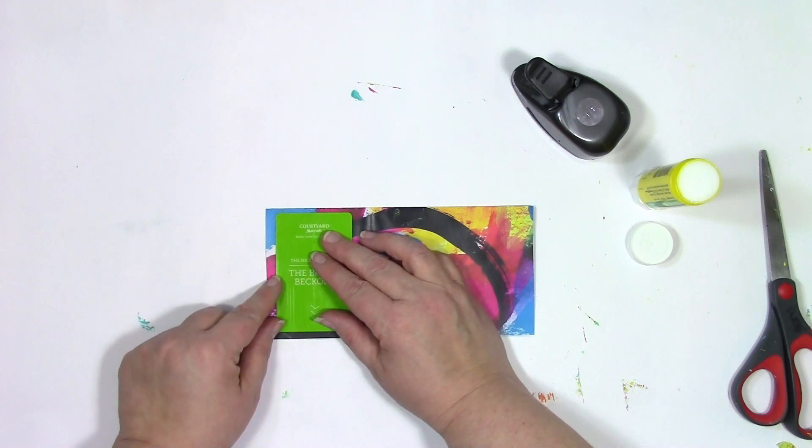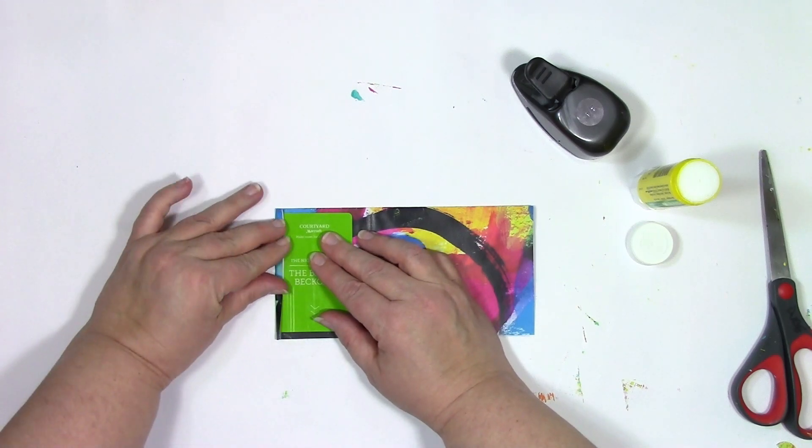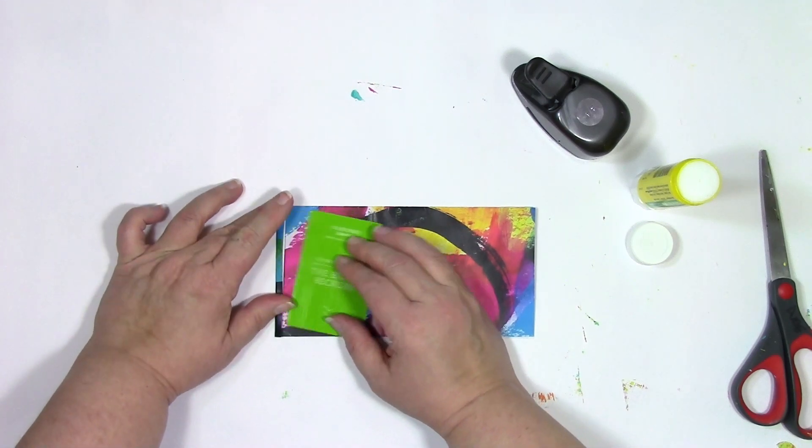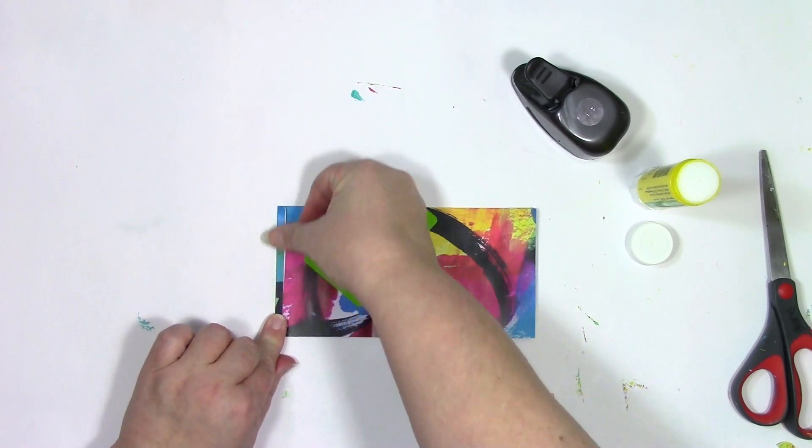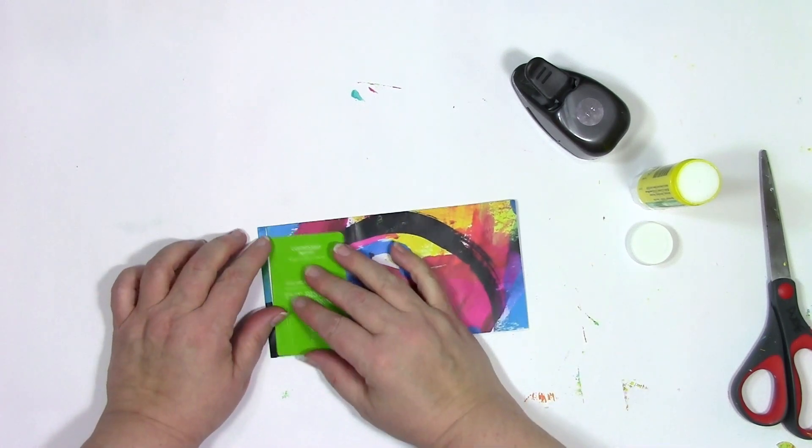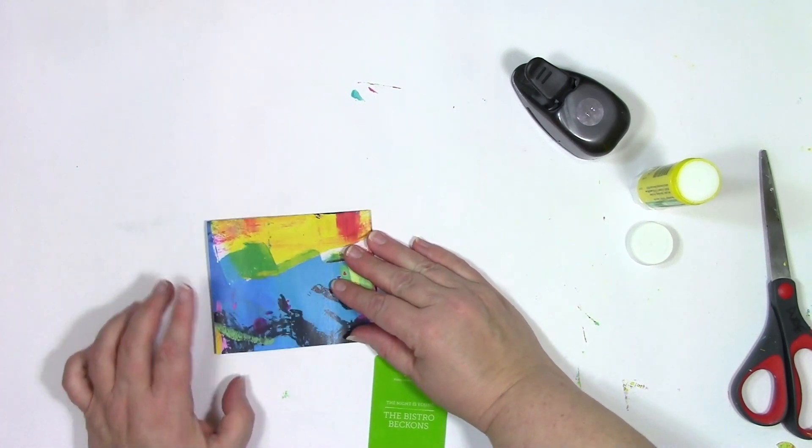Now the next thing you need to do is make the flap for that side. So I need just a little itty-bitty flap, and that's where the card is so very handy. It makes it really easy to get that straight line on that little bit if you're using the card there.